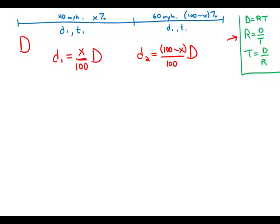Now I want the times of the two legs. Well, here I'm going to use this equation, time equals distance divided by rate, and I'm going to use the given rates. So time 1, that equals this distance, distance 1, divided by the rate in the first leg, which is 40. And when you divide a fraction by a number, it just means multiplication in the numerator, in the denominator. And 40 times 100 is 4,000.